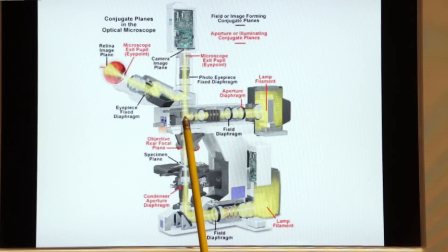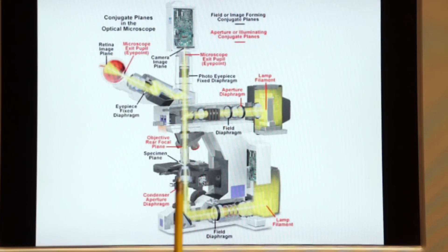So the light travels through this excitation filter, reflects off of a mirror and is sent down through the objective to impact our specimen. So we're reflecting light off of our specimen.